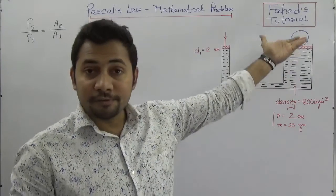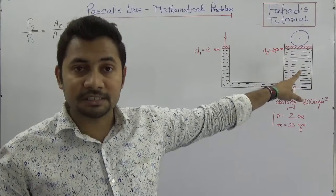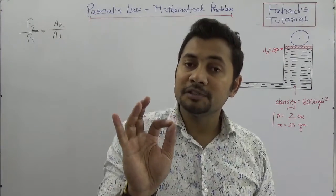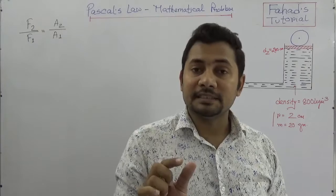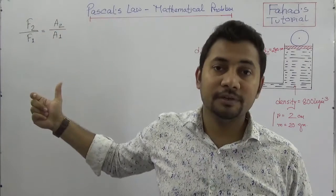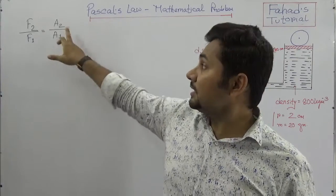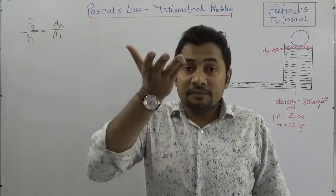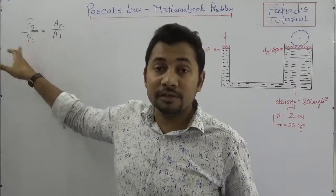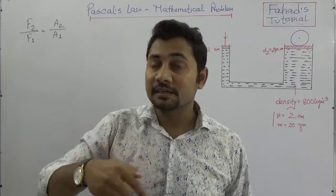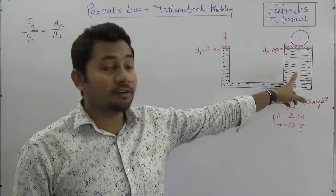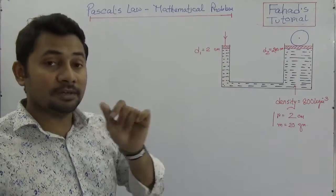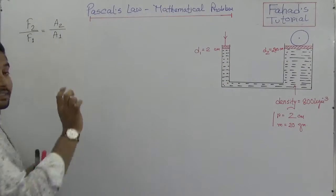F2/F1 = A2/A1. It is a force multiplication process. We get more force in the bigger cylinder or bigger piston compared to the smaller one. So according to Pascal's law: F2 by F1 equals A2 by A1, where A2 is the area of the bigger container, F2 is the force exerted on the bigger cylinder, F1 is the applied force on the smaller cylinder, A2 is the cross-sectional area of the bigger cylinder, and A1 is the cross-sectional area of the smaller one.